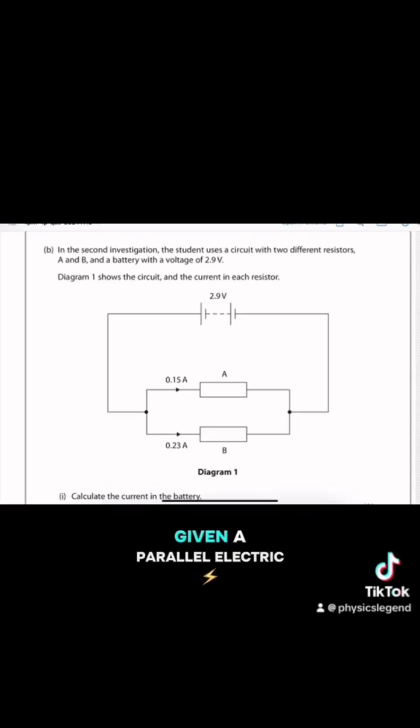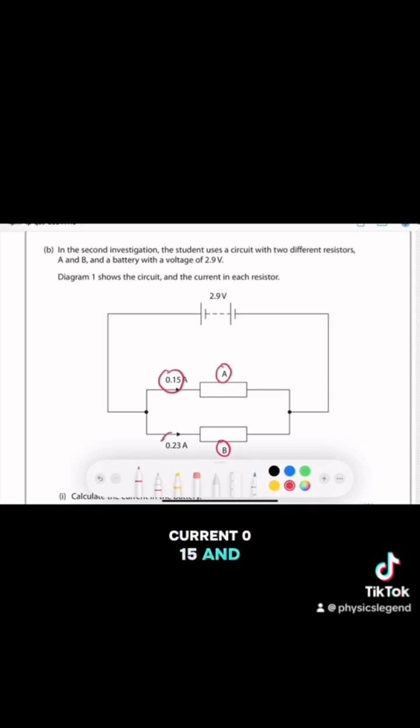In section B, we're given a parallel electric circuit with two branches. Each branch has one resistor - A and the second one B. Each has a current of 0.15 and the other one 0.23 ampere.